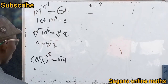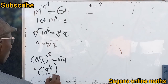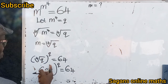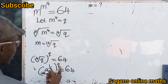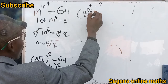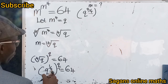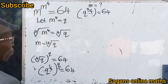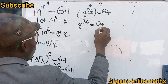Now let's apply a property of indices. We can write the 4th root of q as q to the power of one over four. So our expression becomes: (q^(1/4))^q equals 64. The index inside the parenthesis multiplies the index outside, giving us q to the power of q divided by 4 equals 64.